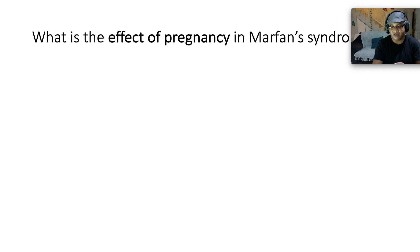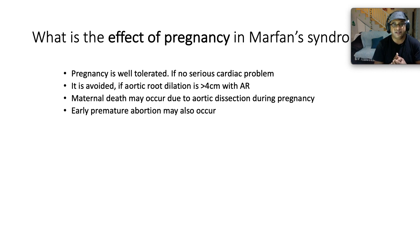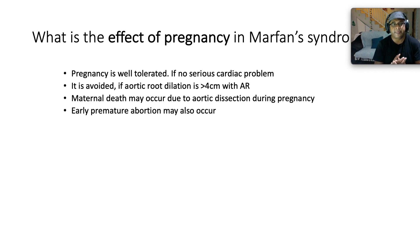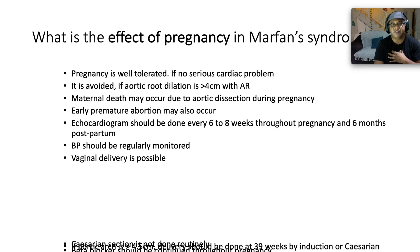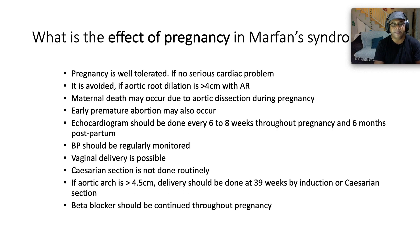Regarding the effect on pregnancy of Marfan's syndrome: pregnancy is generally well tolerated if there is no other serious cardiac problem. It is avoided if the aortic root is dilated more than four centimeters with concomitant aortic regurgitation, because of risk of aneurysm formation and rupture. Maternal death may occur due to aortic dissection during pregnancy. Early premature delivery may also occur. Echo should be done every six to eight weeks throughout pregnancy and six-monthly postpartum. Blood pressure should be monitored regularly; vaginal delivery is possible but C-section is not done routinely. If the aortic arch is above 4.5 centimeters, delivery should be done by no later than 39 weeks by induction or C-section. Beta blockers should be continued throughout pregnancy.